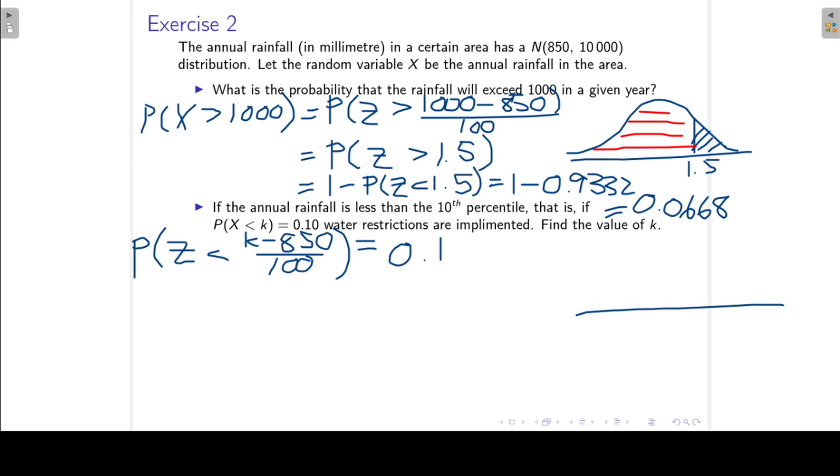Okay, so if we make our drawing here, we know that the area to the left is 0.1. So this will be a negative number. So we can also therefore write, because the normal distribution is symmetrical, we can also say that the probability Z is less than the negative k minus 850 over 100, that this must then be 0.9.